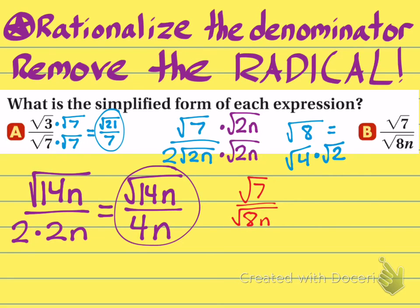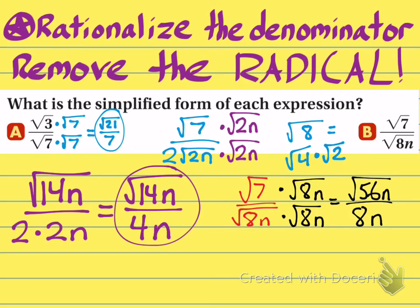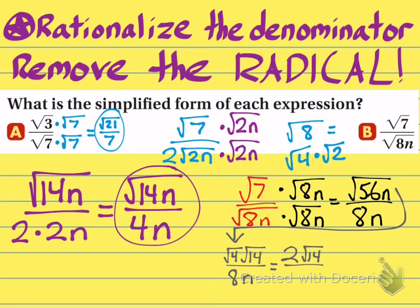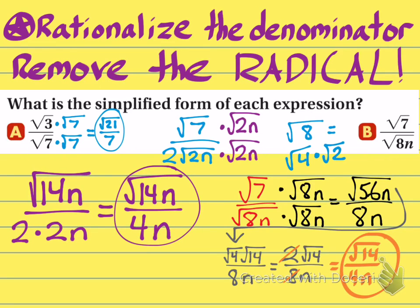Some might think: why not just multiply by radical 8n directly? Look at what happens — in the numerator you get the square root of 56n, and in the denominator you get 8n. The problem is that 56 has a perfect square that can divide it: 56 can be rewritten as the square root of 4 times the square root of 14. Anytime you see a very large number, assume there's a perfect square that can divide it. The radical 4 becomes 2, the 14 stays, and the 8n stays. You now have a 2 in the numerator and 8 in the denominator — 8 divided by 2 is 4. You get the same answer: radical 14n over 4n.